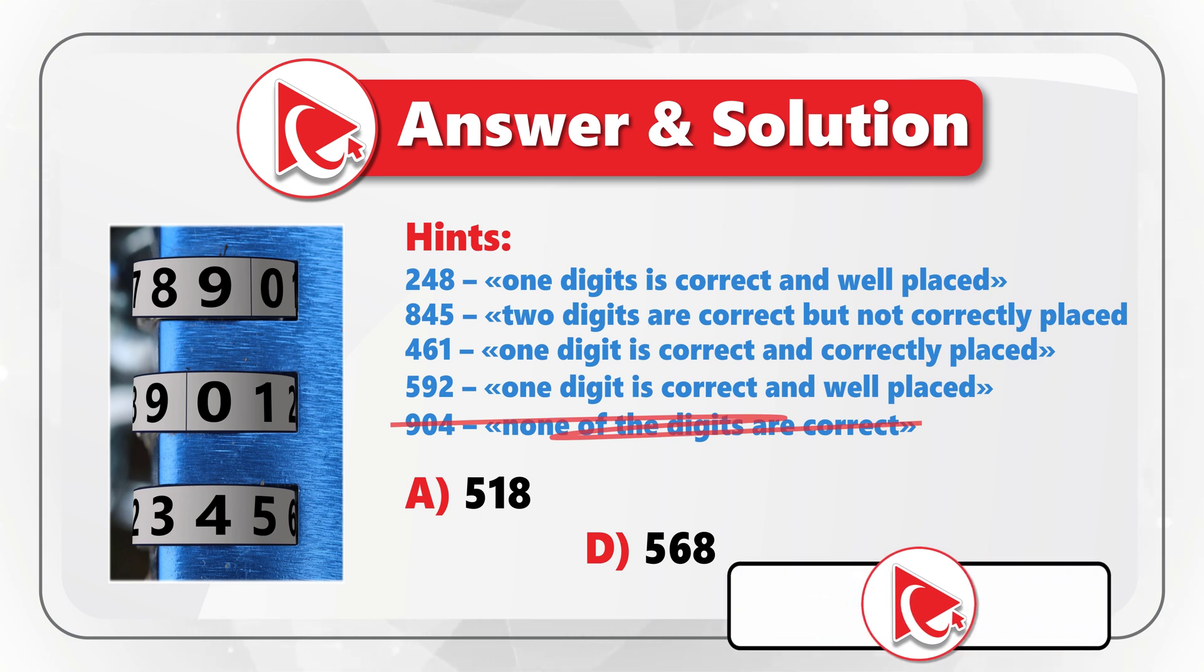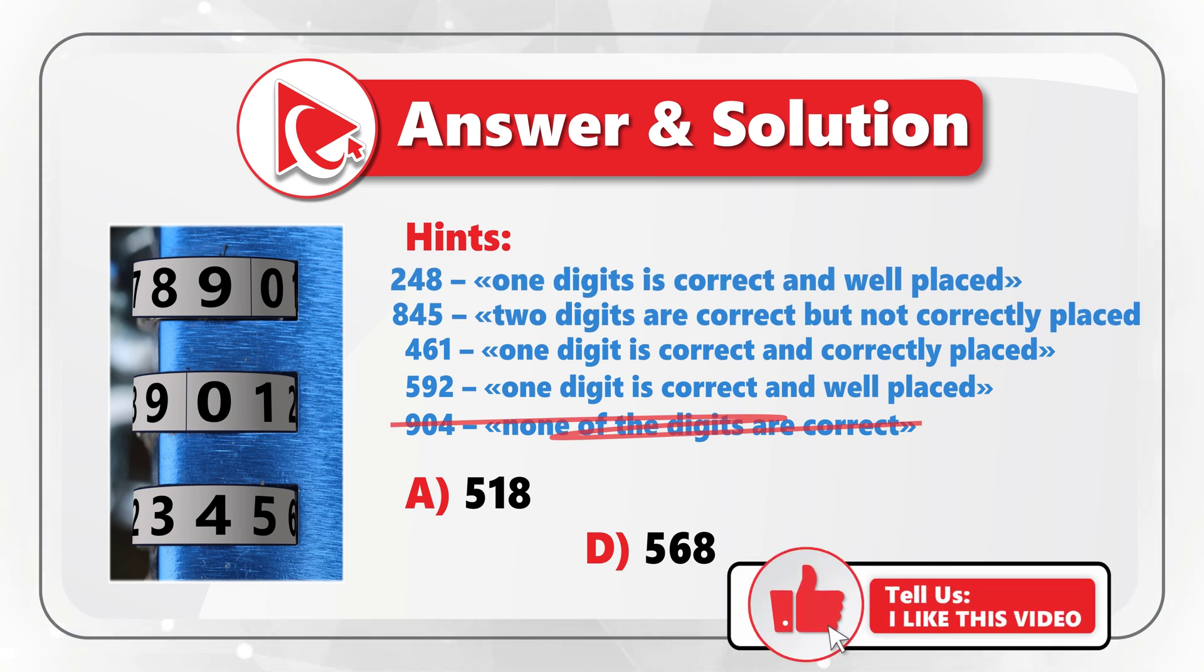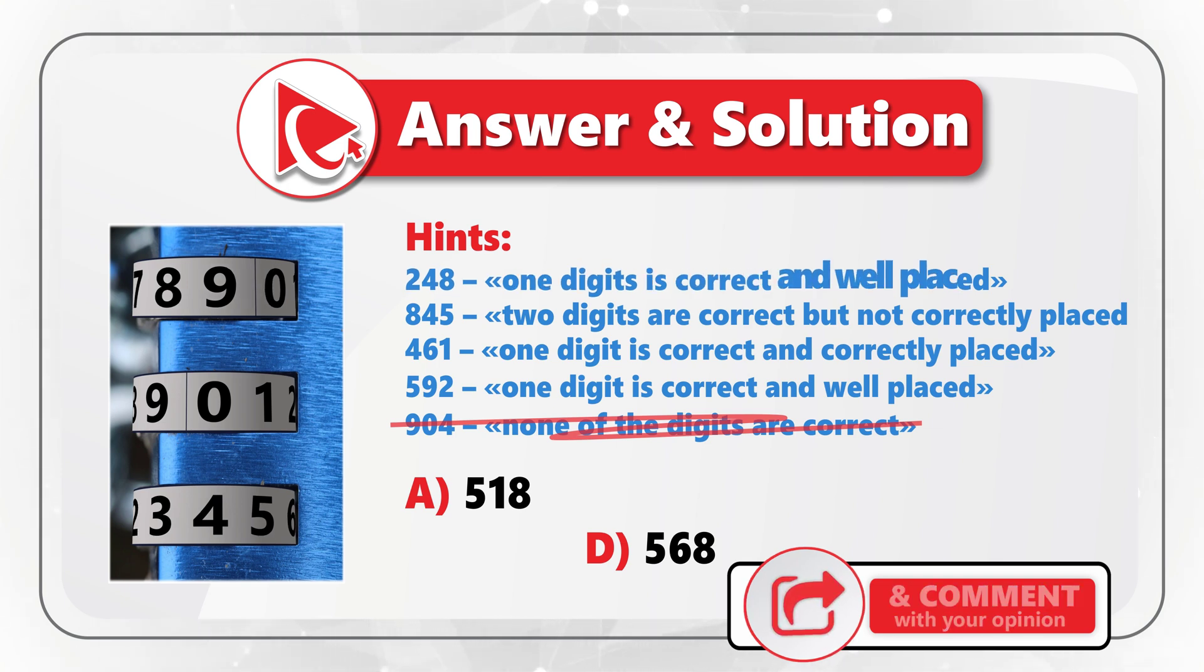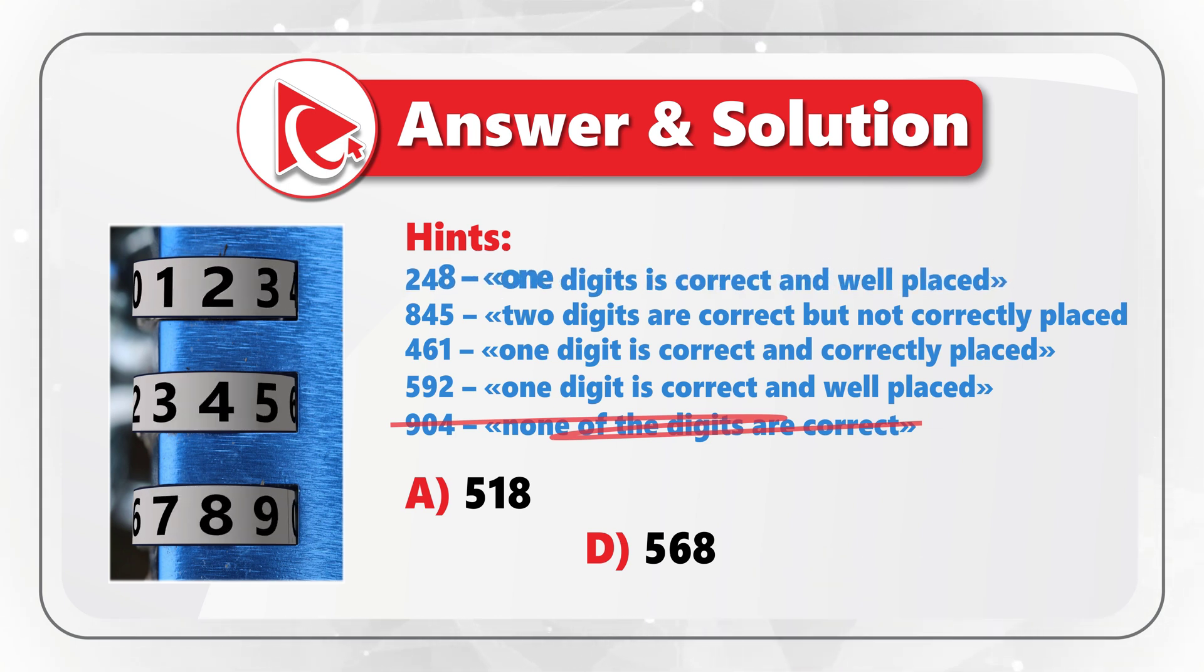Let's continue elimination to get to the correct answer. If we look through the remaining four hints, we learn that in hint 1, where digits are 2, 4, 8, only one digit is correctly placed, which is digit 8. In hint 2, two digits are correct, but they are not correctly placed, and they are digits 8 and 5.